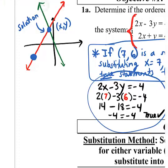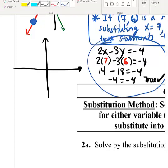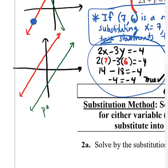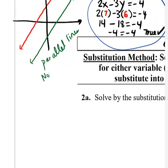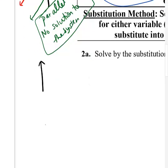Just to be prepared for future problems: if lines are parallel, there's no solution to the system, because parallel lines are never going to intersect. We'll see that sometimes when you try to solve a system of equations, you'll get no solution, which means the lines were parallel lines in disguise.